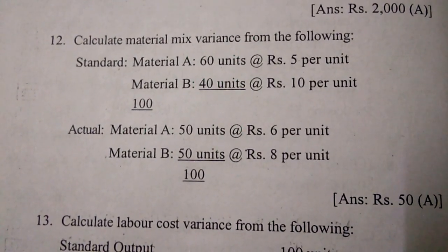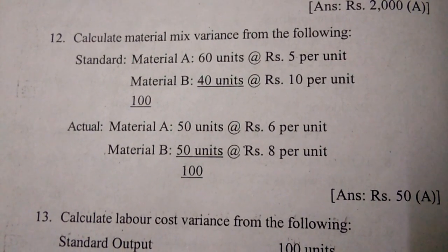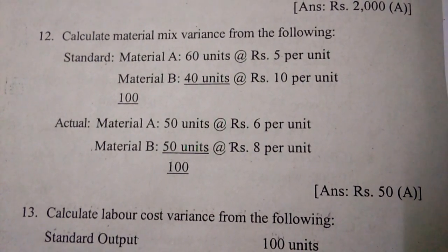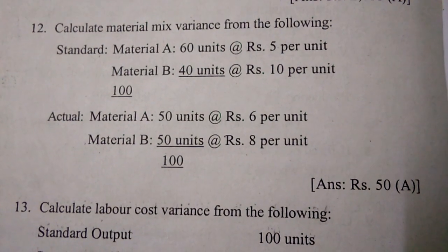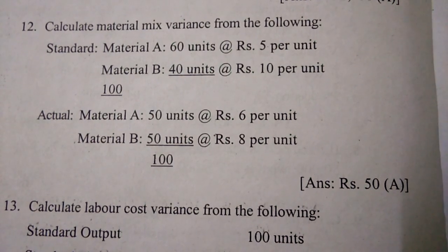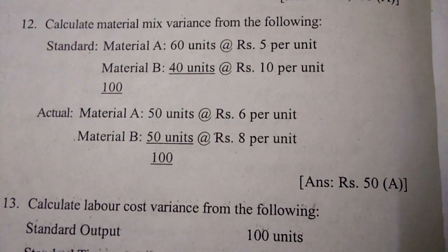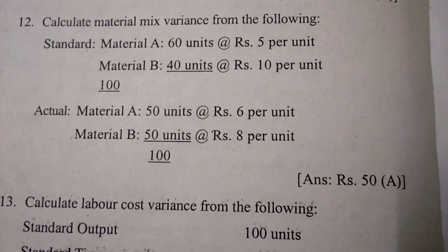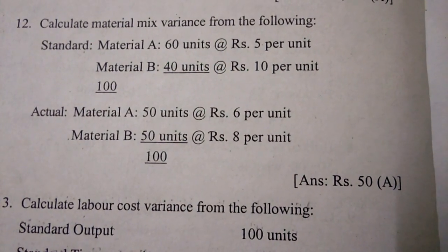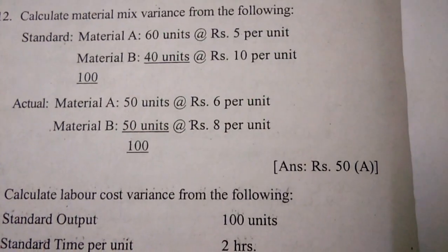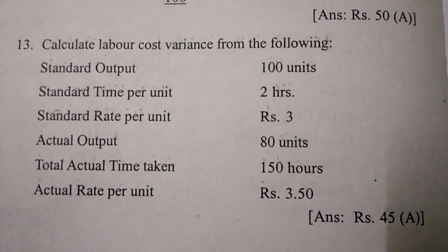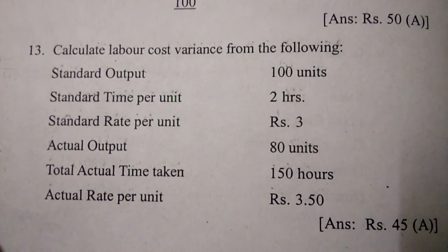Twelfth one: calculate material mix variance from the following — standard: material A 60 units at 5 rupees per unit, material B 40 units at 10 rupees per unit. Actual: material A 50 units at 6 rupees per unit, material B 50 units at 8 rupees per unit — that is 50 rupees.